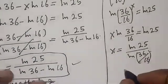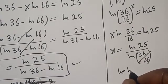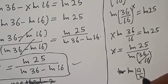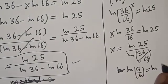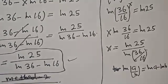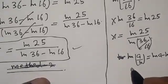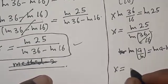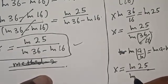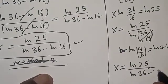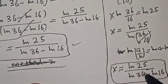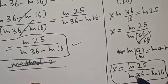And remember, if you have natural log of A over B, that is equal to natural log of A minus natural log of B. Then we have S is equal to natural log of 25 divided by natural log of 36 minus natural log of 16. That is our final answer. You can see that when you make use of the first method or the second method, you are going to get the same answer.